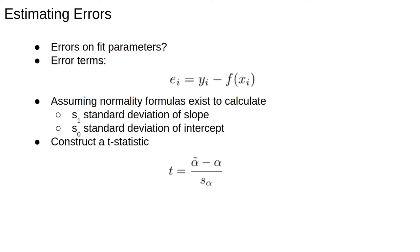We can also construct a t statistic: t equals alpha tilde minus alpha over s alpha. Alpha tilde is the least squares estimate of the slope. This statistic follows a t distribution and can be used to perform hypothesis tests, for example, testing the null hypothesis that the slope parameter is zero.